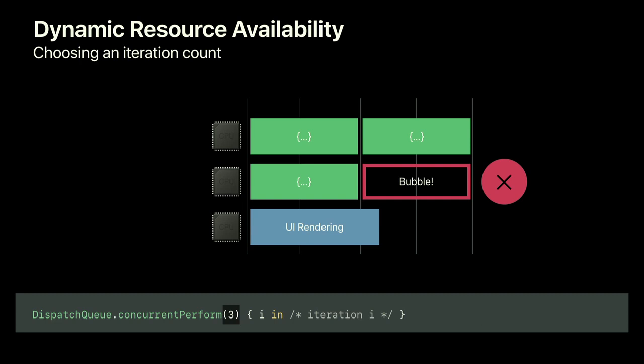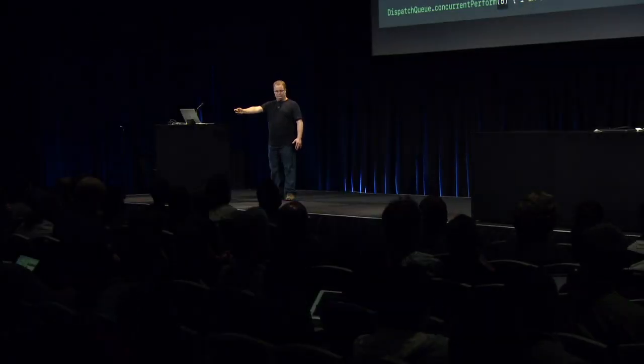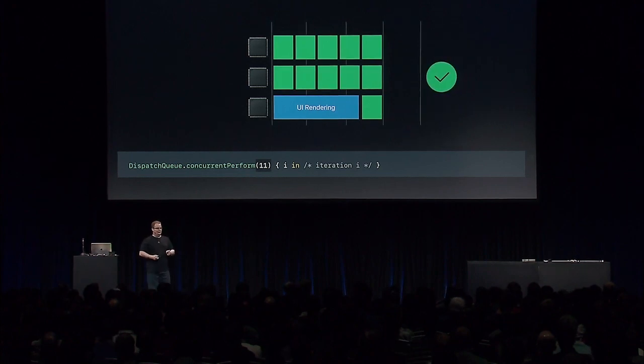We can fix this by increasing the iteration count and giving the load balancer more flexibility. As Tim said on Monday, let's turn the iteration count up to 11 — we fill the holes and have efficient execution, using all available resources until we finish. This is a simplistic example; to deal with real-world complexity, you want to use an order of magnitude more, say 1,000. A large enough iteration count lets the load balancer fill gaps and maximize use of available resources.